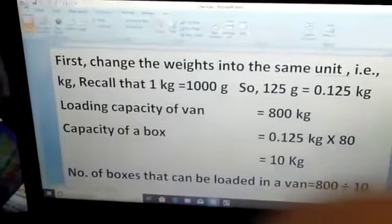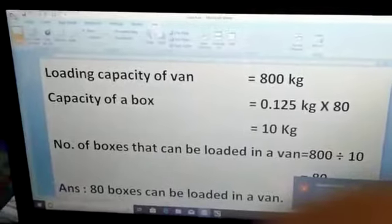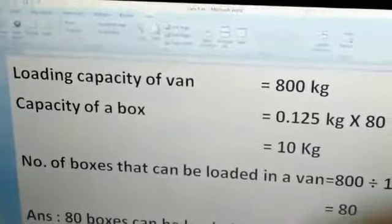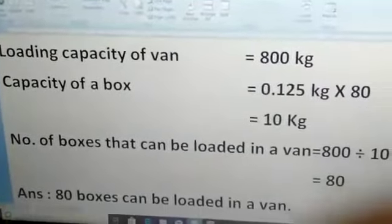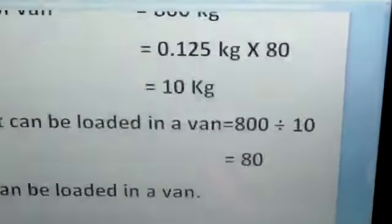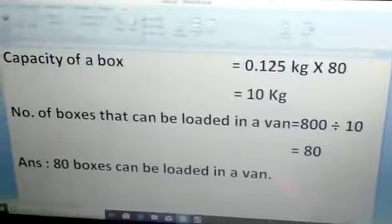Now, what they are asking in the question is the number of boxes that can be loaded in a van. So 800, we know for finding the number we have to go for division. So 800 divided by 10 will give you 80. So 80 boxes can be loaded in a van.